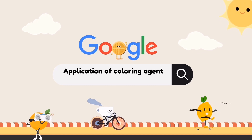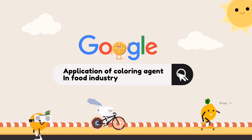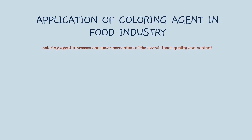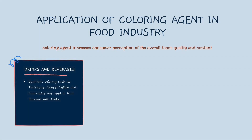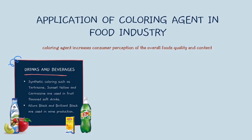Next, let's move on to the applications of coloring agents in the food industry. The purpose of coloring agents is to increase consumer perception of the overall food's quality and content. The first application is in drinks and beverages — synthetic colorings such as tartrazine, sunset yellow, and caramel are used in flavored soft drinks, while black and brilliant black are used in wine production.